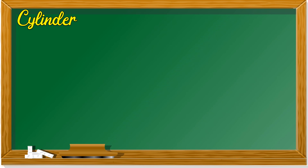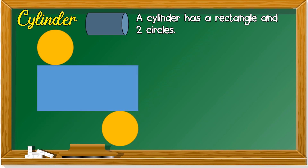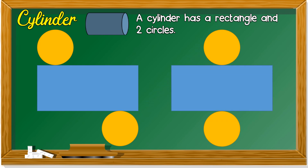Last shape: cylinder. A cylinder has a rectangle and two circles. It can look like this, or like this, or like this. When you fold it, it becomes a cylinder.